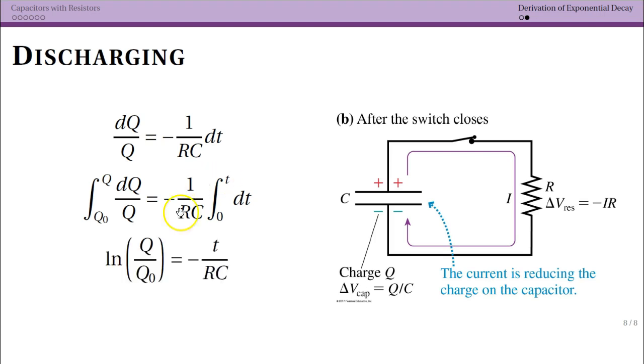So we do that derivation, we do that integration and dQ over Q is going to give us natural log and when you have two terms subtracted in a natural log you're allowed to divide them and dt integrated from 0 to t is simply t over RC. So at this point I have an equation but what I really want is Q as a function of t.